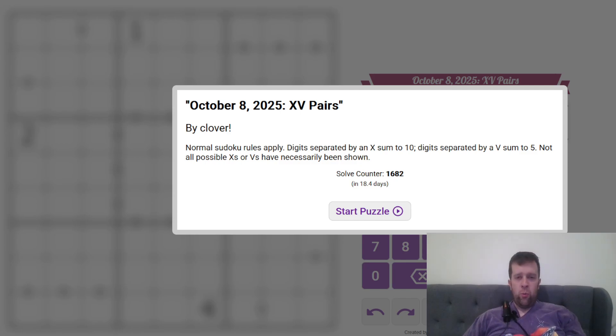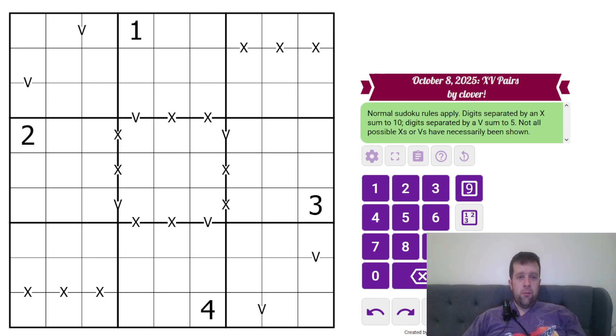So this is XV Pairs. We've done XV Pairs on the channel several times, but I'm going to run you through it. So normal Sudoku rules apply. Each box, each row, and each column must contain digits one to nine once each.